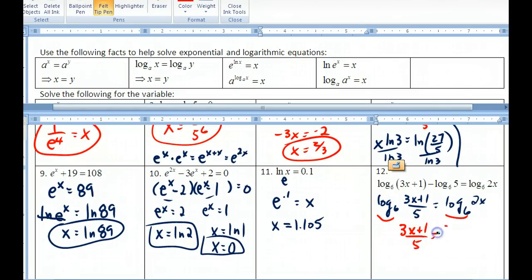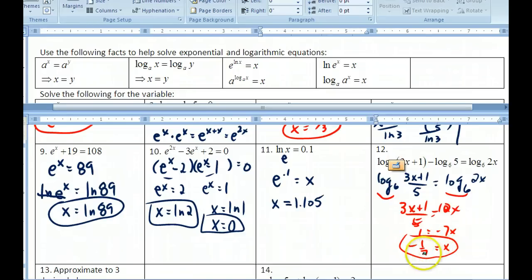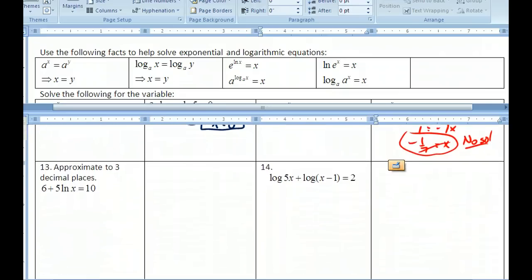3x plus 1 over 5 equals 2x. We can make this 10x. So 3x plus 1 equals 10x. Negative 7x equals 1. And so x equals negative 1 seventh. And what you should do is go back and make sure that your answer works. Now if we look at this answer that we got, negative 1 seventh, let's go back and plug it in. 2 times negative 1 seventh is a negative number. So this actually turns out to be no solution because I cannot take the log of a negative number. Remember, logs are only defined for positive x's. Can't even get zero.